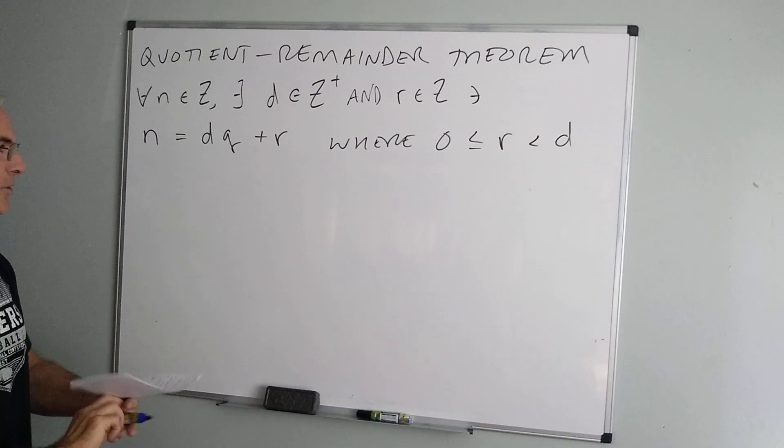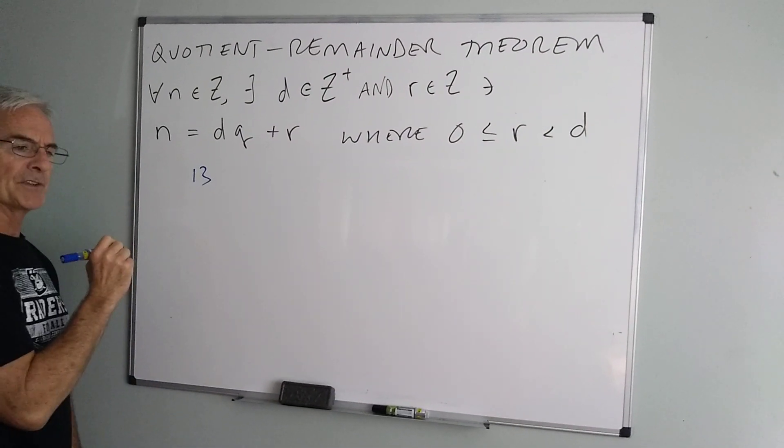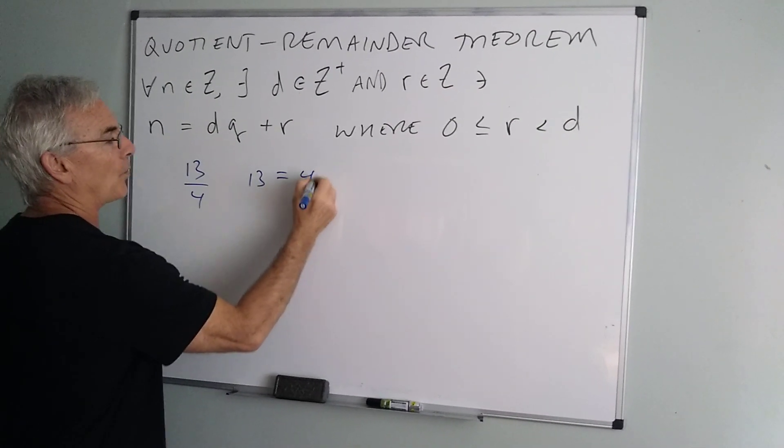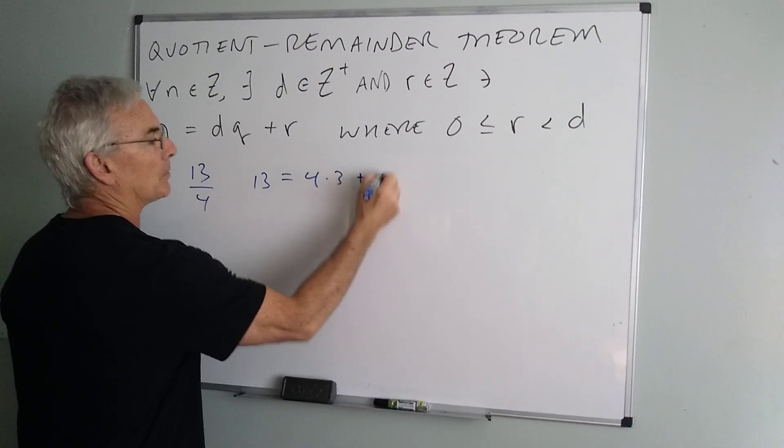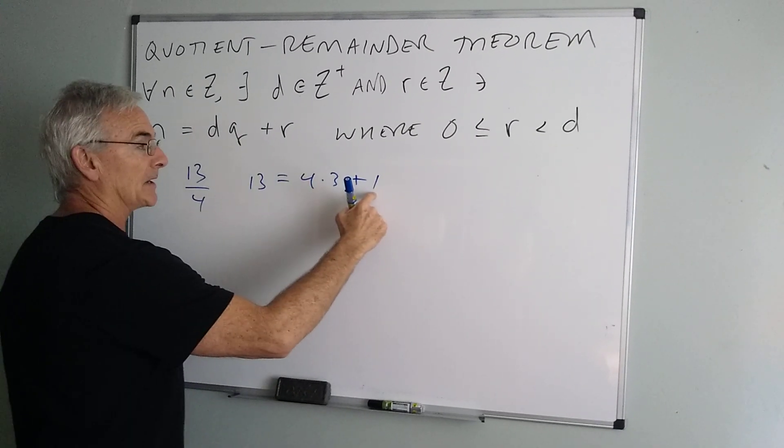So for example, if I took a number like 13 and I said I want the denominator to be 4, that means we could write 13 as 4 times 3 plus 1, 4 being the denominator, 1 being the remainder.